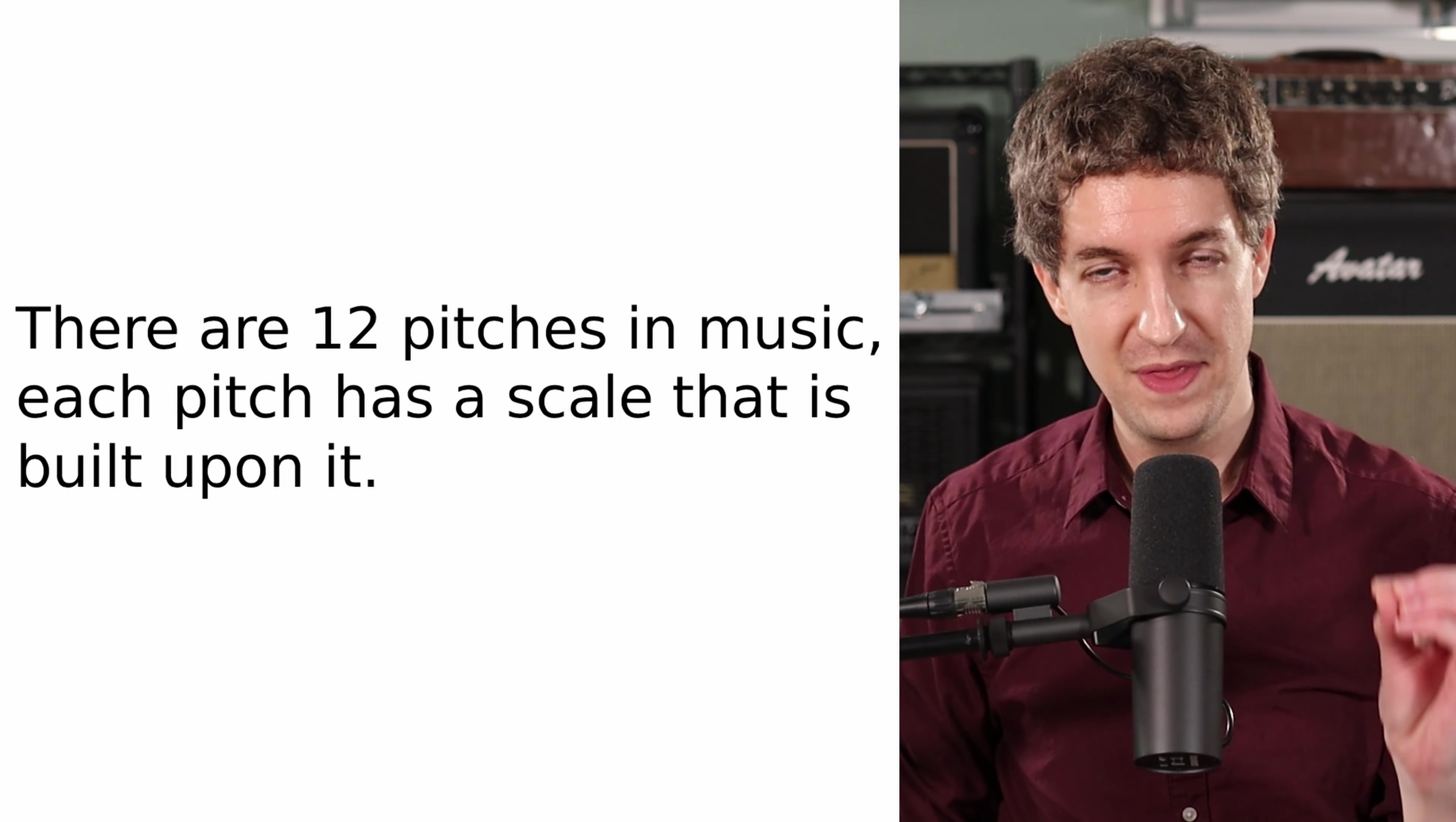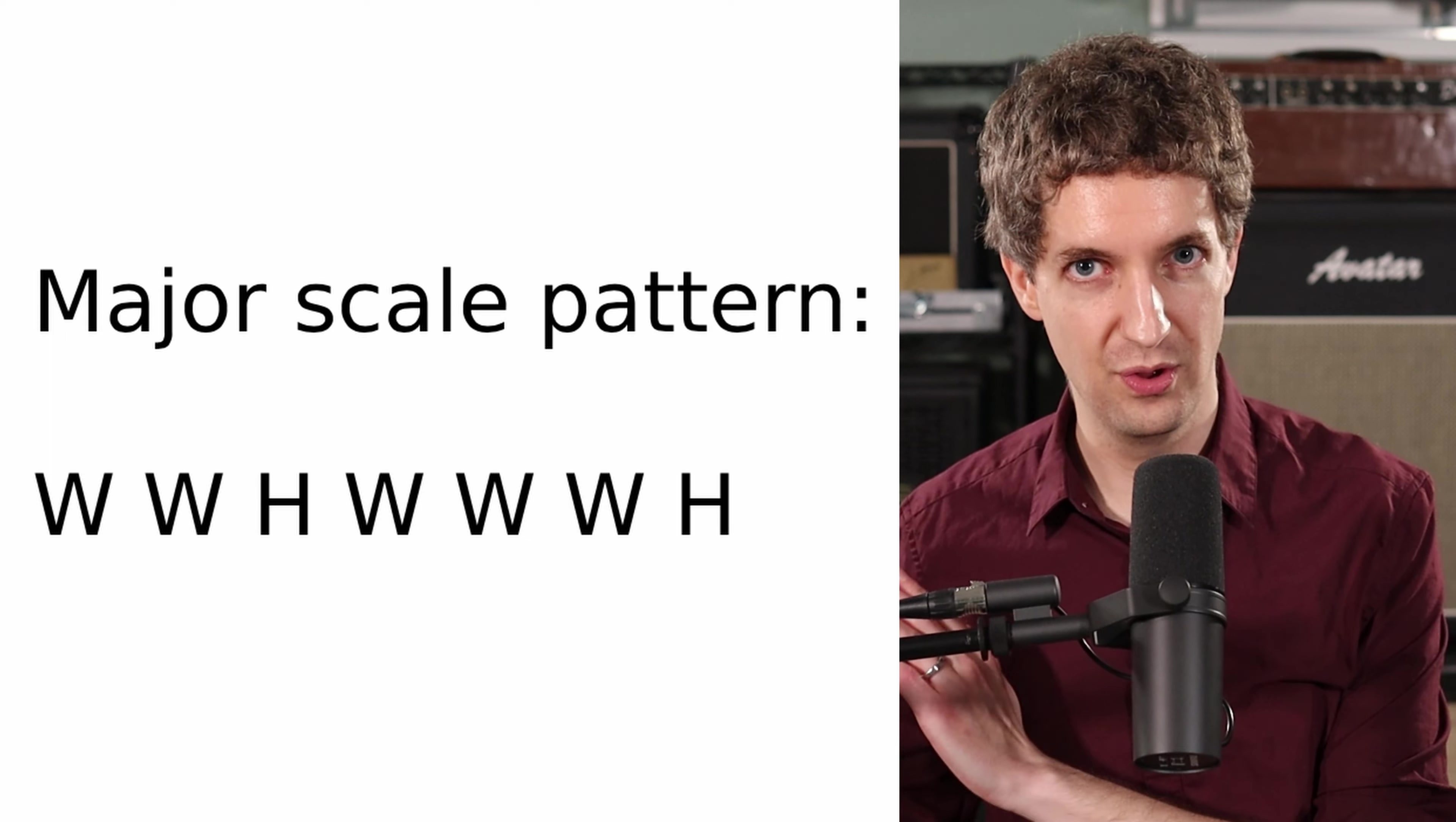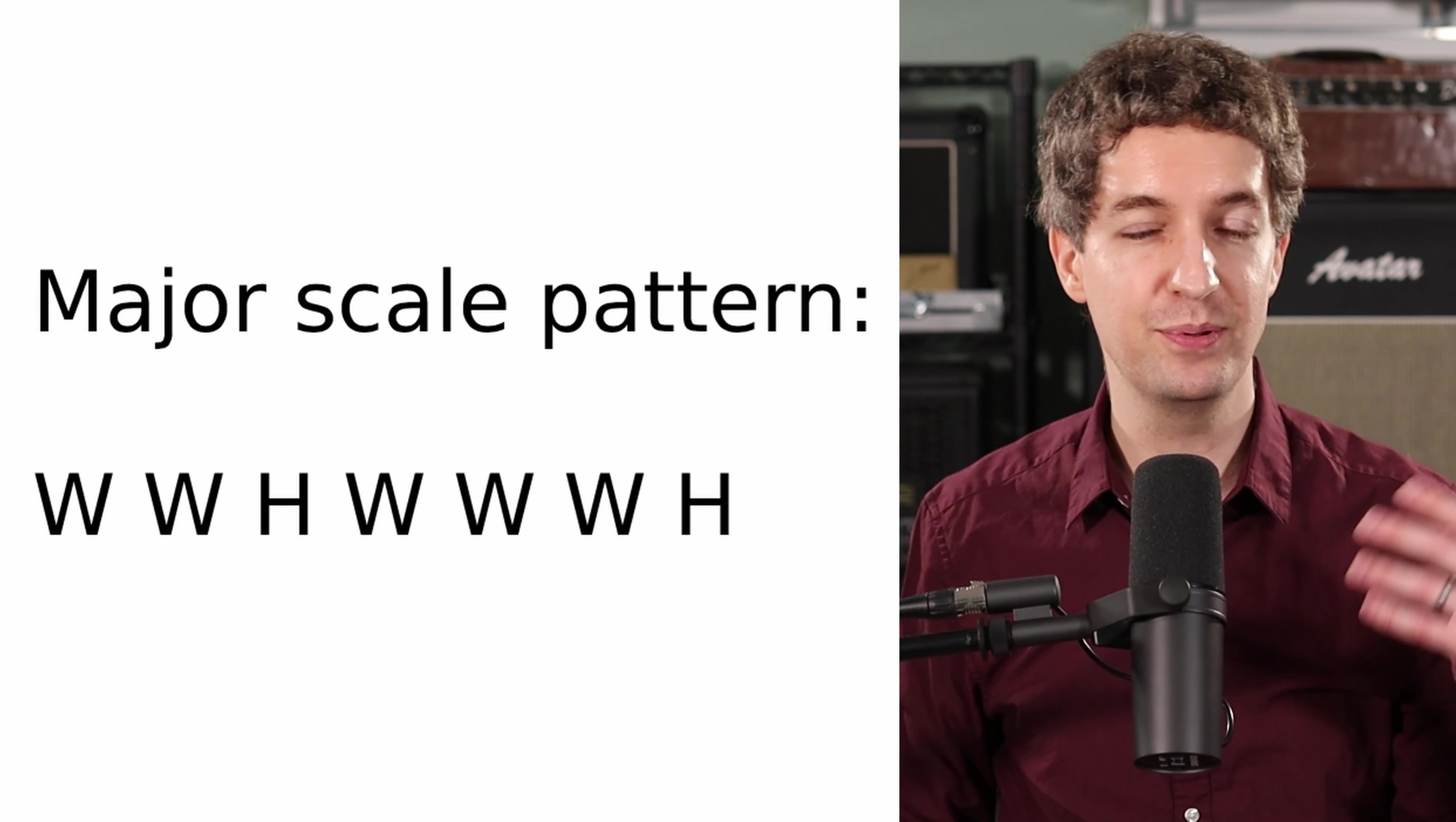Each one of those 12 tones has a scale that is built upon it. What is a scale? A scale is a certain pattern of notes that sounds good together. And in Western music, the scale that we most use is called the major scale. The major scale has a certain pattern of whole steps and half steps: whole, whole, half, whole, whole, whole, half. A whole step means we move two notes up and a half step means we move one note up. I dive into the major scale much more in detail in my video on major scales, so if you're interested, please check that out. But for now, we want to just know that it's that pattern: whole, whole, half, whole, whole, whole, half.